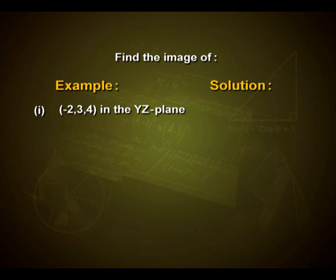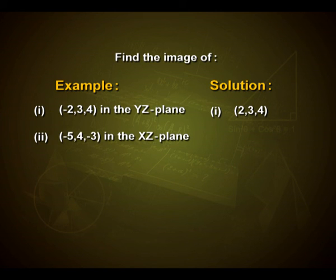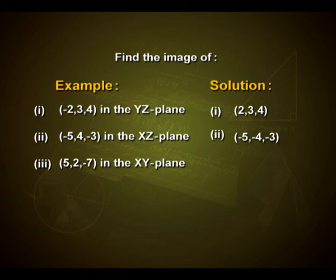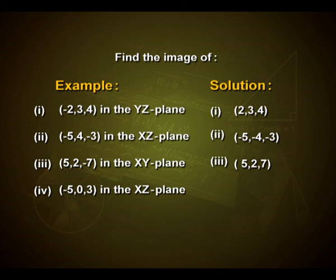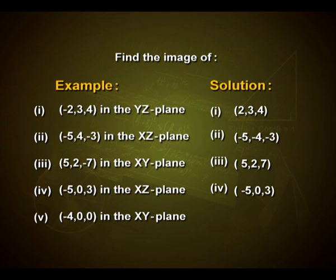Example: Find the image of given points in the coordinate planes. The image of (−2, 3, 4) in the yz plane is (2, 3, 4). The image of (−5, 4, −3) in the xz plane is (−5, −4, −3). The image of (5, 2, −7) in the xy plane is (5, 2, 7). The image of (−5, 0, 3) in the xz plane is (−5, 0, 3). The image of (−4, 0, 0) in the xy plane is (−4, 0, 0).